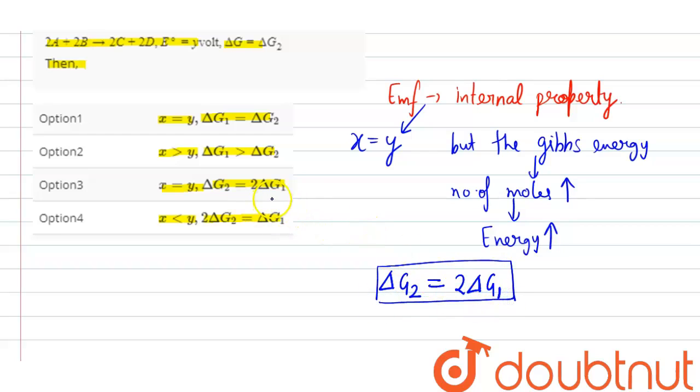So that means X is equal to Y and delta G2 is equal to twice of delta G1. Option 3 is correct. Thank you.